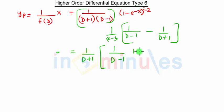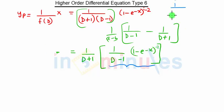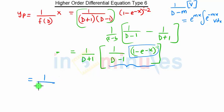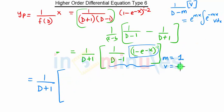First we will consider only the part 1 upon (D minus 1) into (1 minus e raised to minus x). This part is of the form 1 upon (D minus m) into v, where v is some function of x. The solution is given by e raised to m times x, integration of e raised to minus mx into v dx. In our case, m is 1, so 1 upon (D plus 1) will remain as it is.